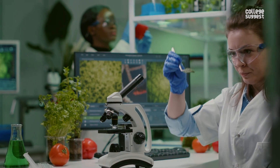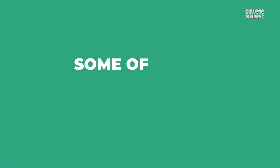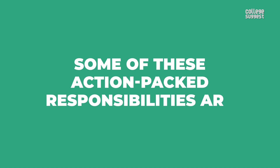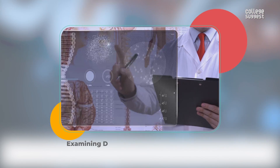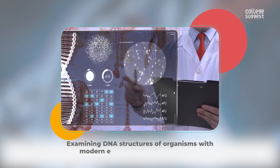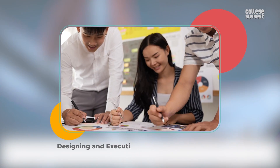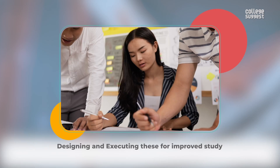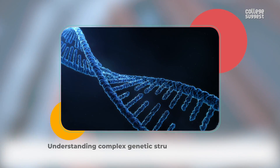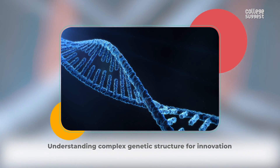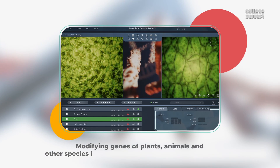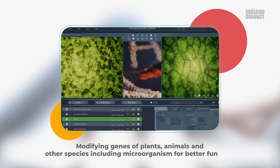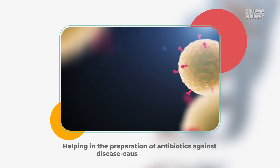However, for a genetic engineer, wherever you go, the roles and responsibilities are unaltered and thrilling. Some of these action-packed responsibilities are as follows: examining DNA structures of organisms with modern equipment and technologies; designing and executing these for improved study; understanding complex genetic structure for innovation; modifying genes of plants, animals, and other species including microorganisms for better function; and helping in the preparation of antibiotics against disease-causing organisms.